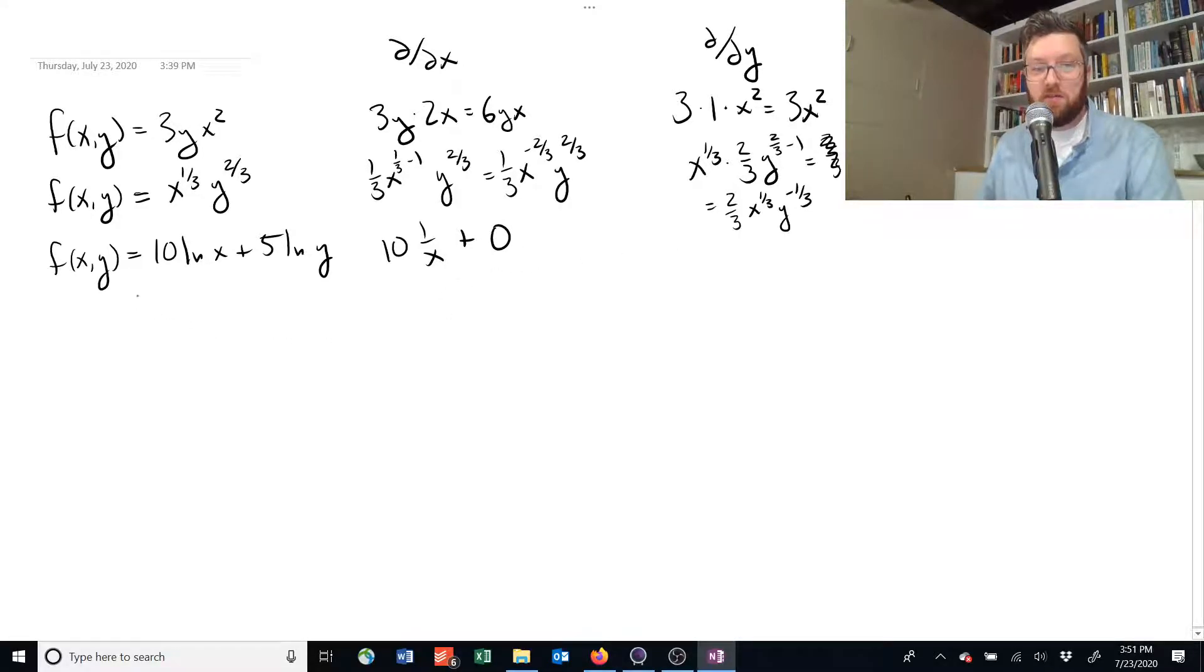Over here, the first term, there's no y, and we're taking the partial derivative with respect to y. So this is just 0, has no impact. And then we have 5 times 1 over y. Okay? So that is how you do these three examples.